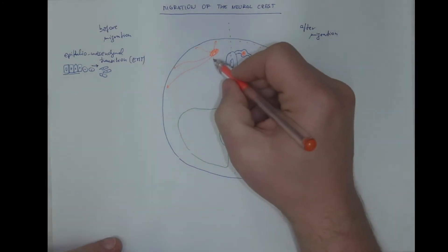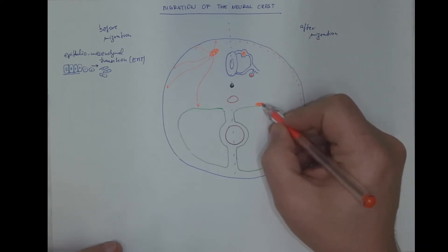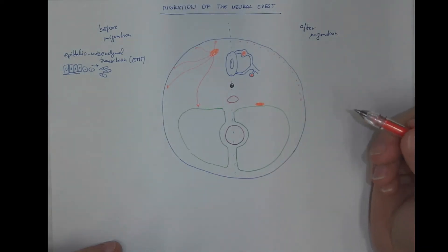Some cells will migrate towards the dorsal wall of the celom cavity and they will become the largest modified sympathetic ganglion, also known as the adrenal medulla.